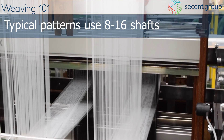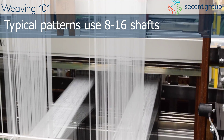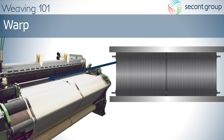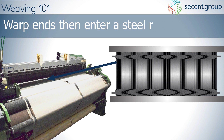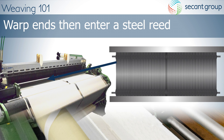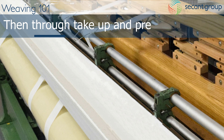After all required warp ends are entered into the harness, you enter ends into a stainless steel reed. The reed will determine the width of the product and ends per inch, which is predetermined by the customer or the engineer. Ends are then placed between a take-up roller and a press roller.